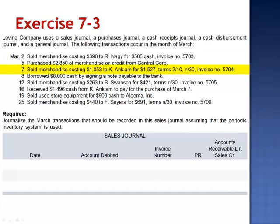March 7th: sold merchandise costing $1,053 to Anklum for $1,527, terms 2/10 net 30, invoice number 5704. This is a sale of merchandise on account, and it is recorded in the sales journal. We would include March 7th as the date, the account debited would be our customer Kay Anklum, invoice number 5704, and the amount of the journal entry — debiting accounts receivable and crediting sales — $1,527.